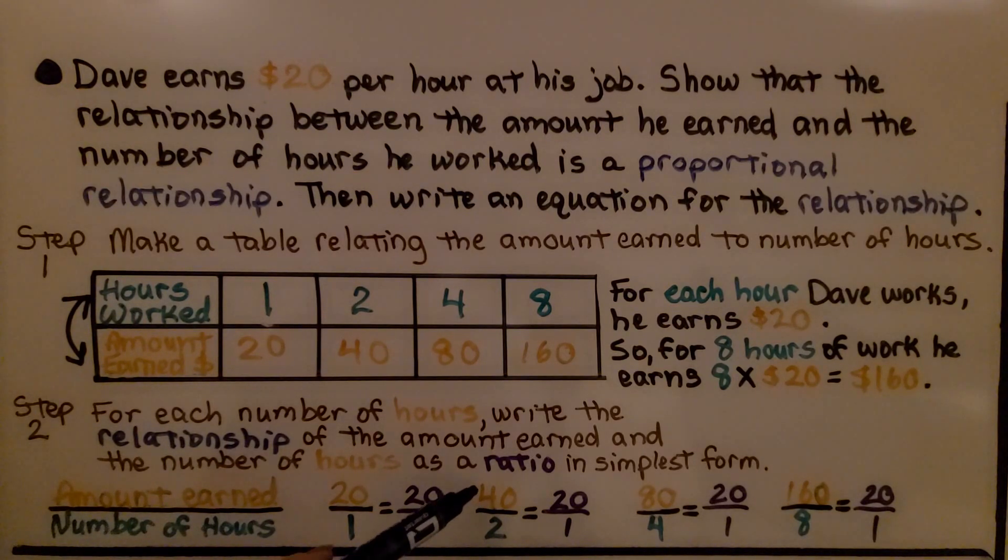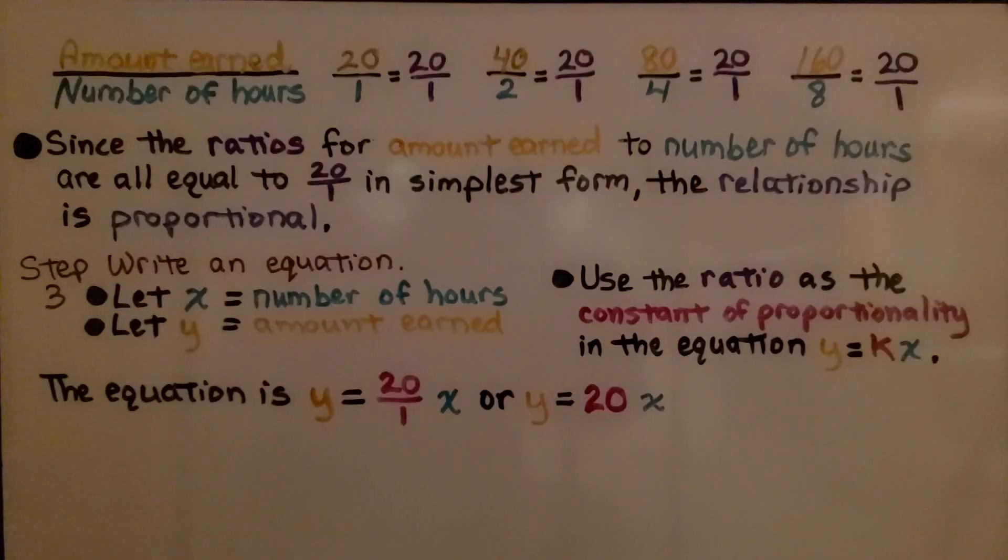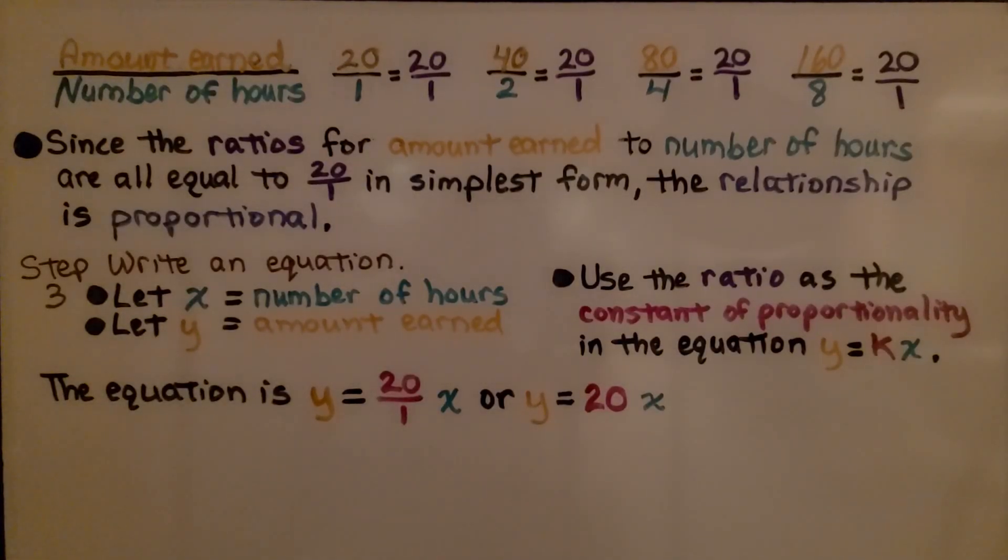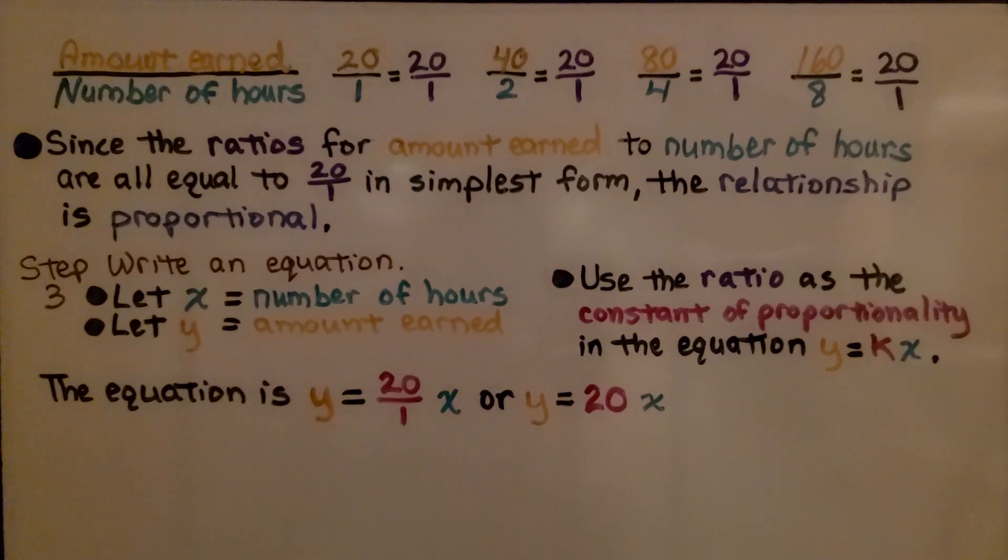No matter how many hours he works, the ratio is 20 to 1. Since the ratios for amount earned to number of hours are all equal to the ratio 20 to 1 in simplest form, the relationship is proportional.